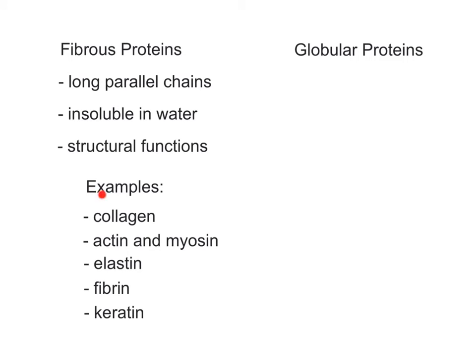Examples of fibrous proteins include collagen, which gives strength to bones, ligaments, and tendons; and actin and myosin, which function in muscle contraction, cell division, and cellular transport.